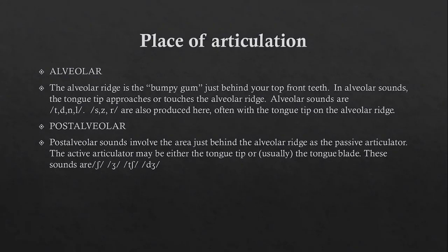In alveolar sounds, the tongue tip approaches or touches the alveolar ridge. The sounds are t, d, n, l, s, z, and r. The next place of articulation is post-alveolar.